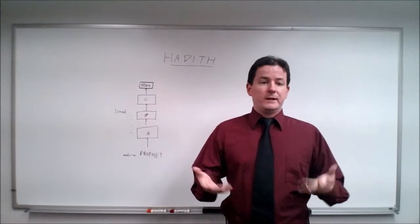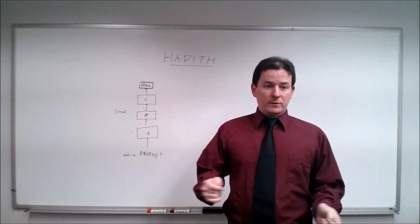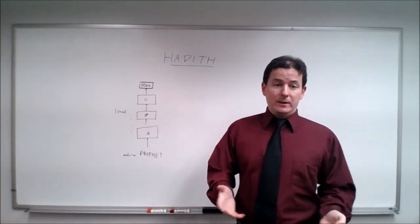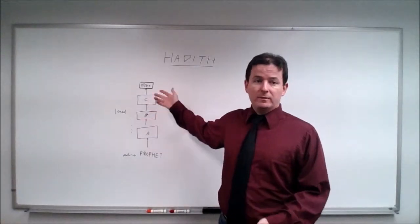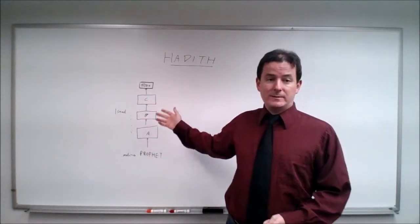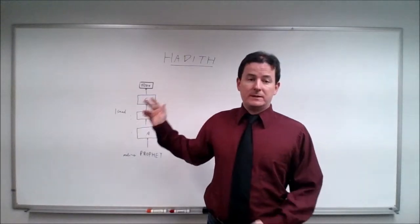And then because the Prophet, they claim, was illiterate and at any rate not very many people were writing things down, this has been handed on by a form of a chain of transmission. The transmission is called a Nisanat.